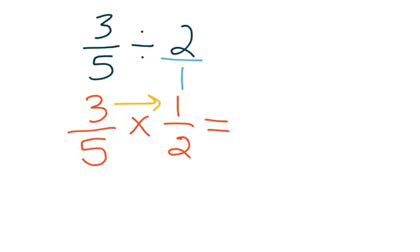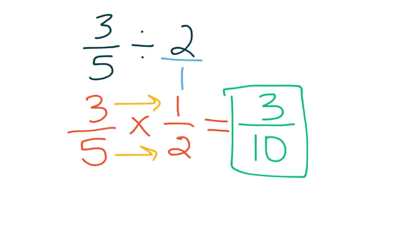And then I'm going to multiply straight across. When I multiply straight across, 3 times 1 is 3, 5 times 2 is 10, and this time my answer is already in simplest form, so I can keep it, and my final answer would be 3 tenths.